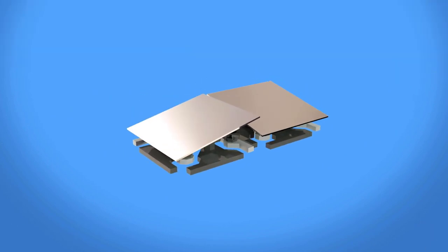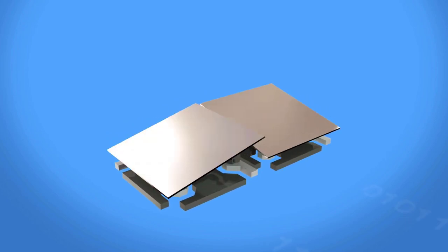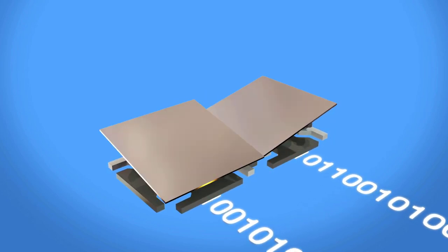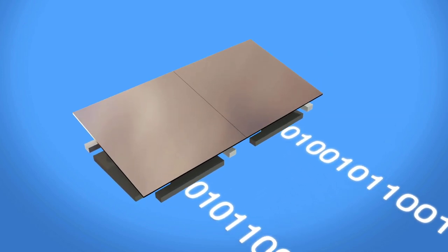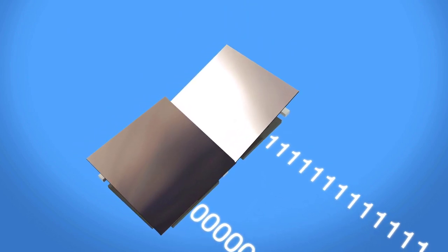A DMD steers light by electrostatically deflecting or switching each mirror up to thousands of times per second. To make this possible, a one or zero is loaded into a memory cell beneath each mirror, which activates electrodes that control whether the mirror is switched to an on or off state.